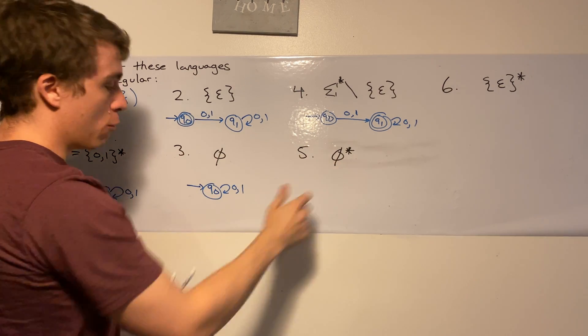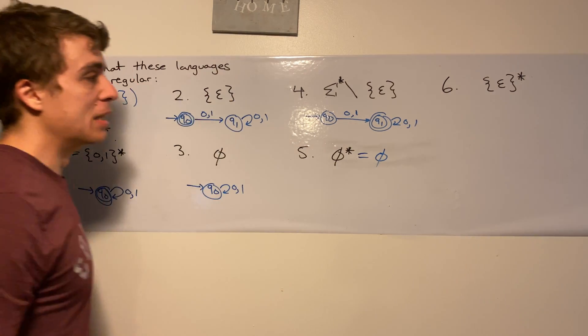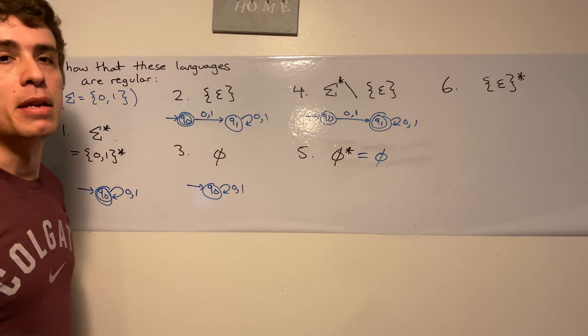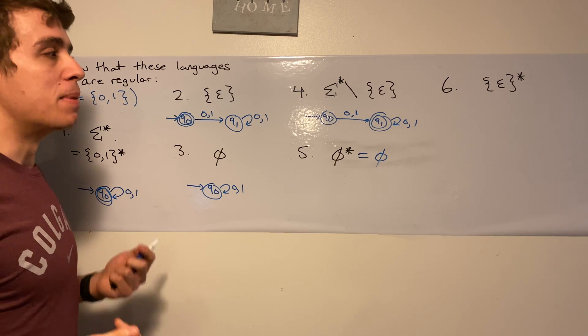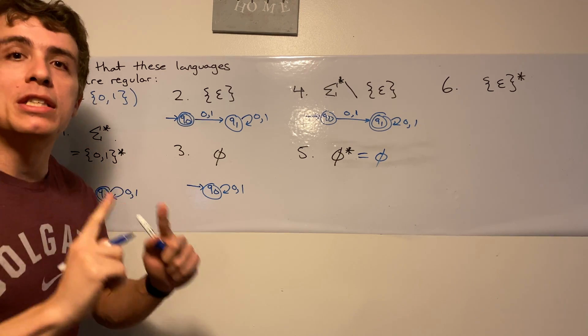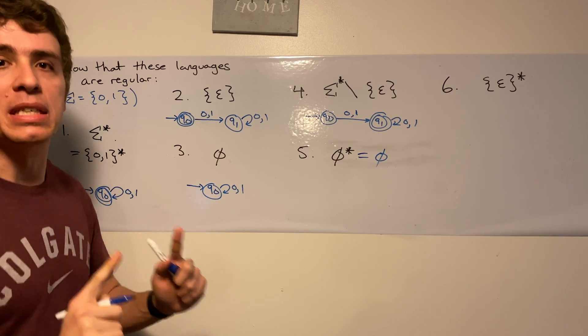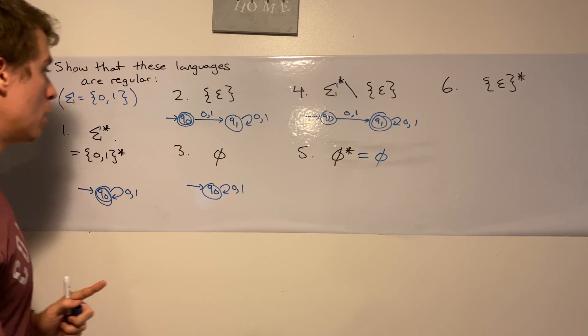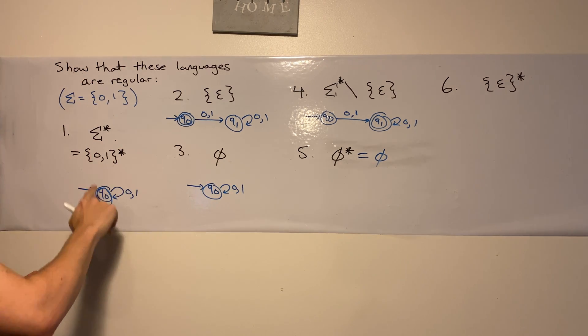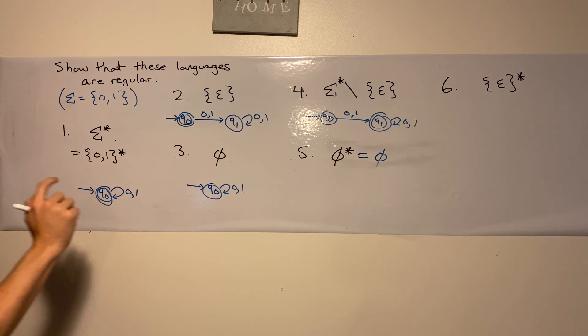So you may think, well, this is just equal to the empty set, because you're just picking nothing out of the empty set. But that's not quite true. What string is always in the empty set of any language? We saw before that, I'm sorry, what is in the star of any language? Well, it's the empty string.